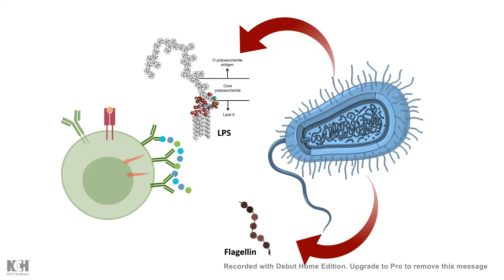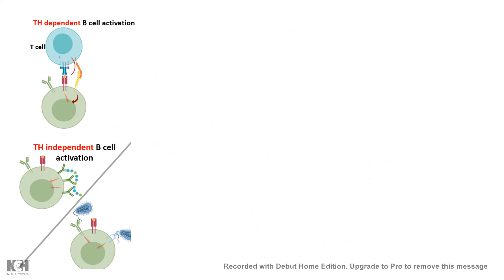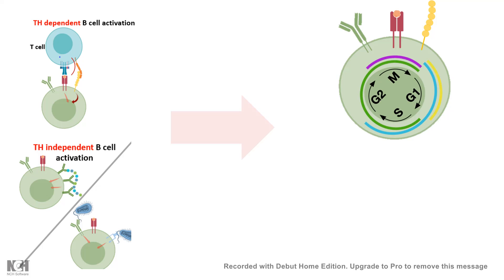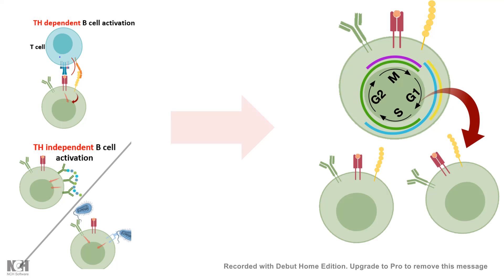Bacterial lipopolysaccharide (LPS) can also serve as a T-independent antigen and leads to B-cell activation. However, B-cell activation is stronger when it involves T-cell help. Whether it is T-helper dependent or T-helper independent B-cell activation, in both cases the B-cell re-enters the cell cycle, because generally immature B-cells are at the G0 phase. They re-enter the cell cycle at G1, then progress from G1 to S phase, where they increase their genetic material by DNA replication and thereby proliferate in number.